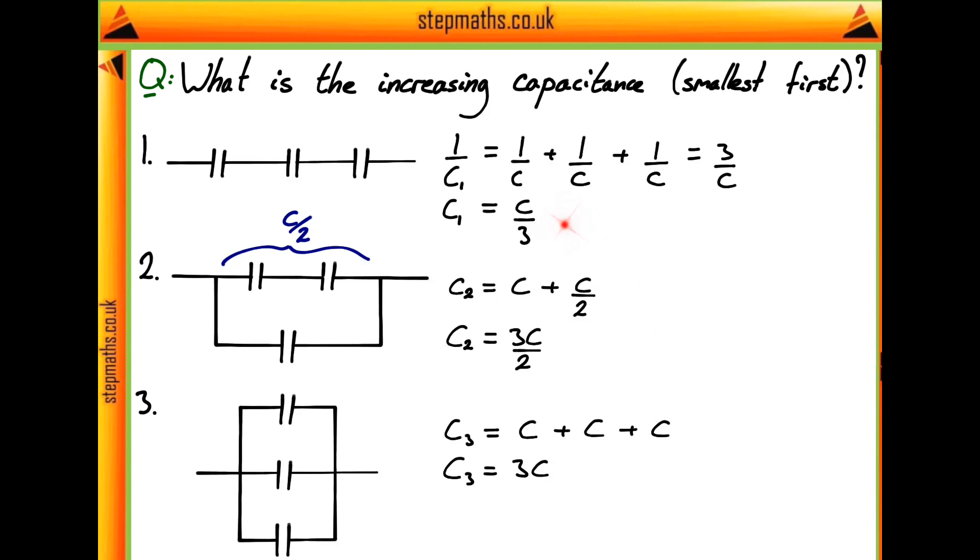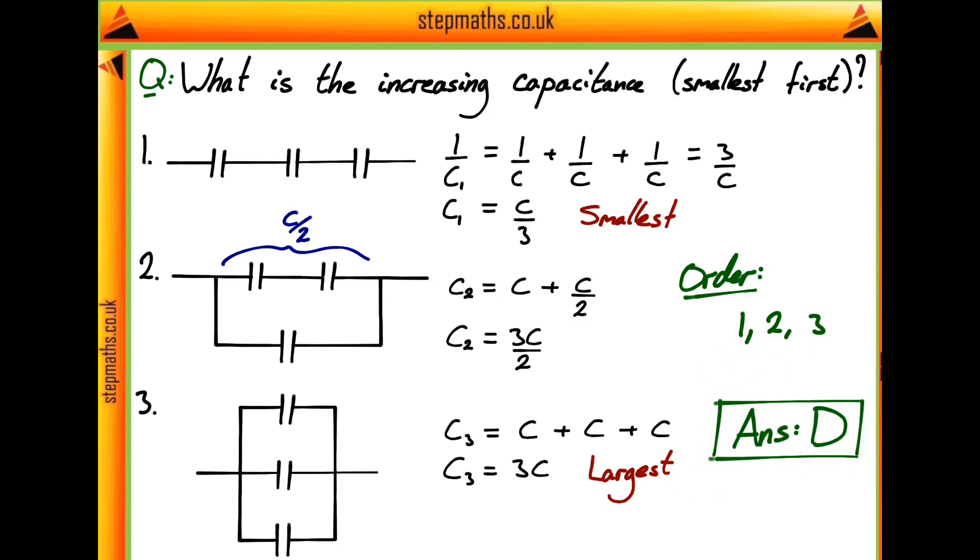Therefore then, this first one up here is going to be the smallest, and the bottom one is going to be the largest. So the order is going to be one, two, three, which corresponds to answer D.